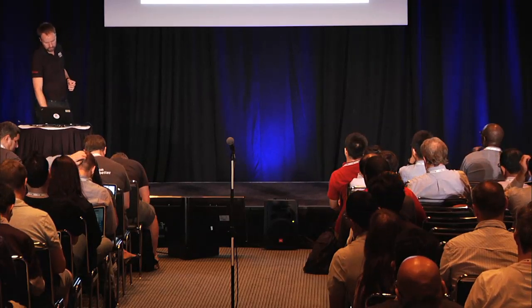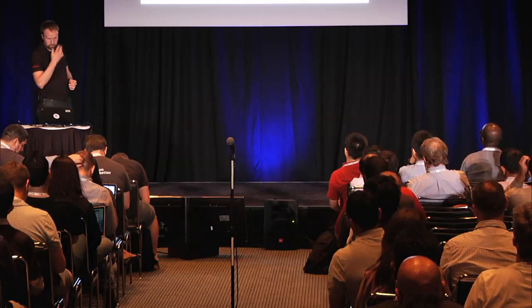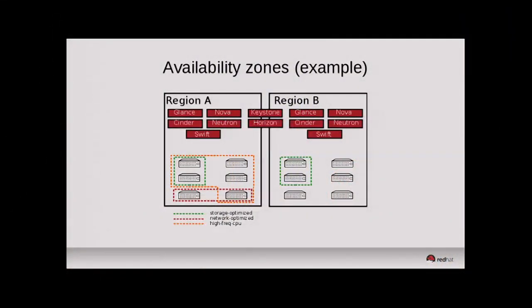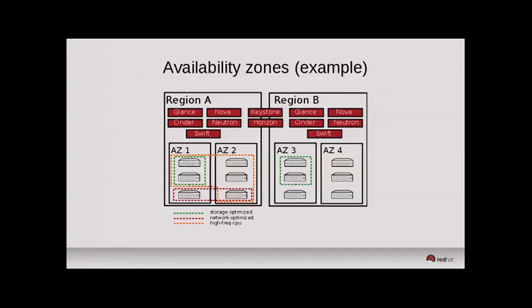Hosts, of course, can be in multiple host aggregates. In our environment that has regions and host aggregates defined, if we layer over some availability zones, instead of just the four original host aggregates, we have eight, but four of those are exposed as availability zones. That might mean that in my two geographic regions, I have two separate data centers in each, or my failure domains could be much more local to that, depending on how I'm operating my cloud.